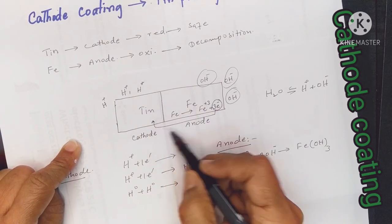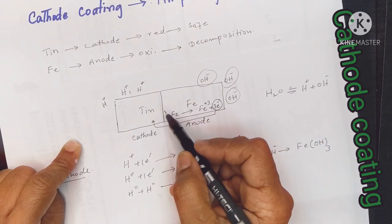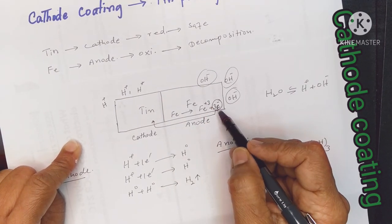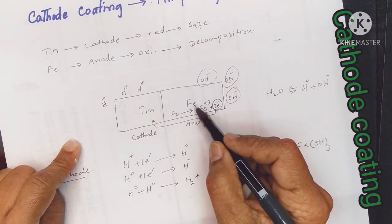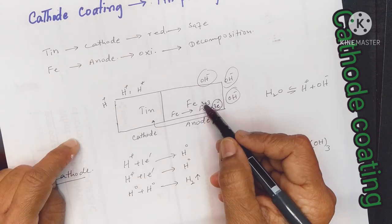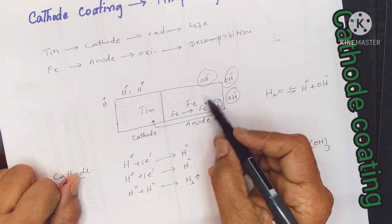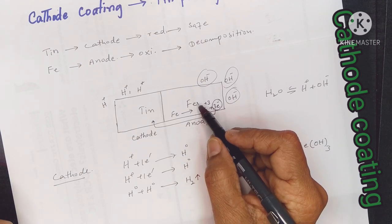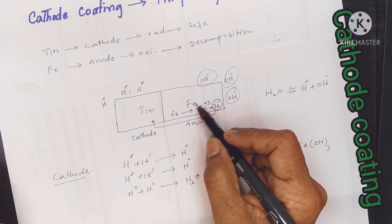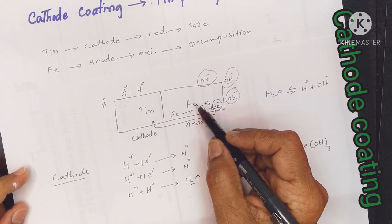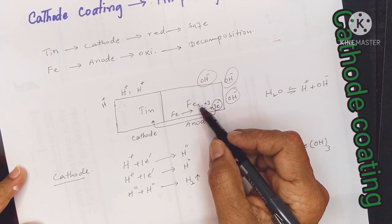This is the galvanic cell produced, involving iron hydroxide. Iron will continue to corrode. So this concludes cathode coating — tin plating causes the iron to keep corroding once the coating is scratched.